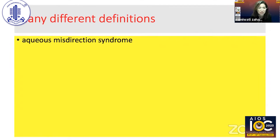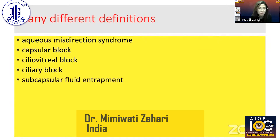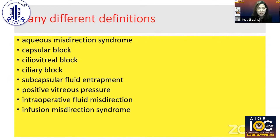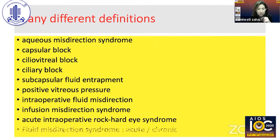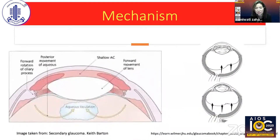There are many different definitions. Aqueous misdirection syndrome is the commonest term. It is also called capsular block, ciliary-vitreal block, ciliary block, subcapsular fluid entrapment, positive vitreous pressure, intraoperative fluid misdirection, and infusion misdirection syndrome. The last three are used when it occurs intraoperatively. Some authors have proposed 'fluid misdirection syndrome,' with 'acute' referring to intraoperative cases and 'chronic' for the classic postoperative form.